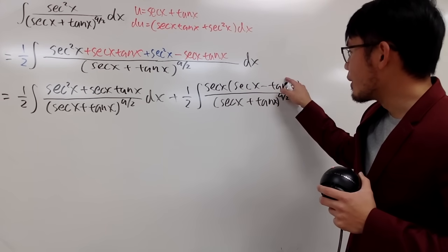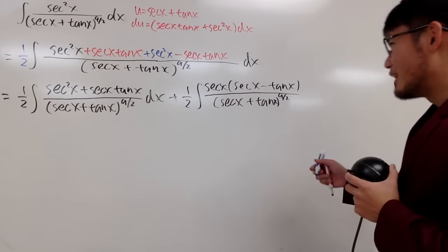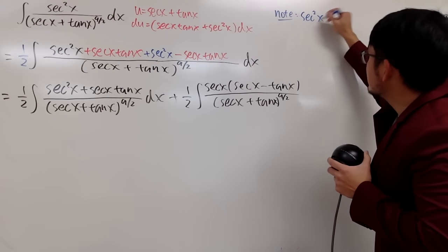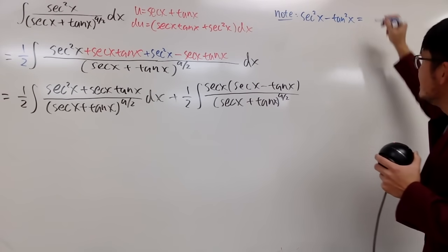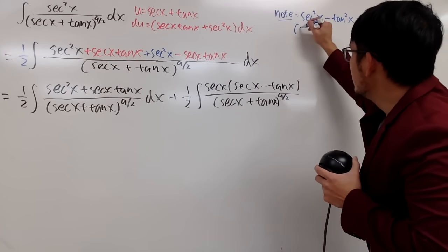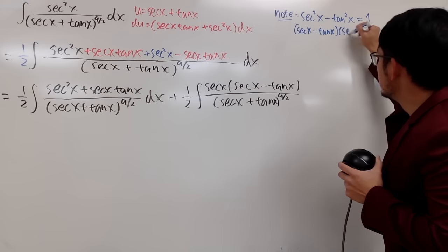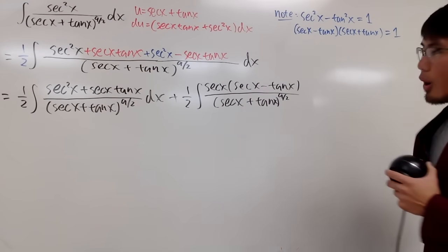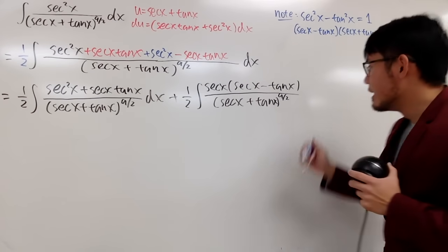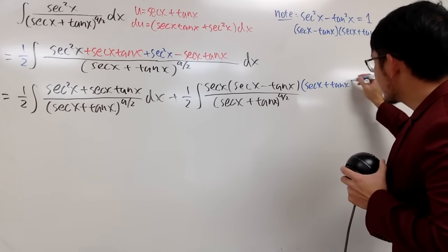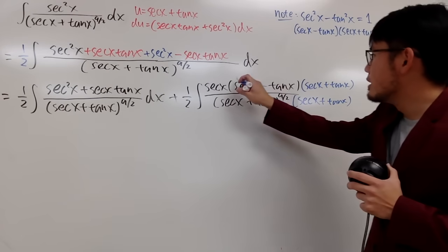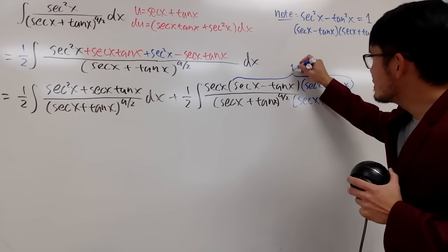But if we have the second power, it's much better — we do have an identity for that. Recall the identity: secant squared x minus tangent squared x equals 1. And of course this is just a difference of two squares, namely secant x minus tangent x times secant x plus tangent x equals 1. So let me multiply this on the top and also on the bottom so that this right here will just be 1. Secant x plus tangent x times secant x plus tangent x on the bottom as well, and all of this is just a nice 1.